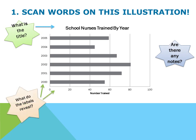Take a few moments to scan this illustration. What is the title? What do the labels reveal? Are there any notes? You should notice that the title at the top of the illustration states "school nurses trained by year." The X axis, which runs horizontally, tells us the number of nurses trained, and the Y axis informs us about the years or time period covered. If you look closely at this illustration, you will see the author did not provide notes.